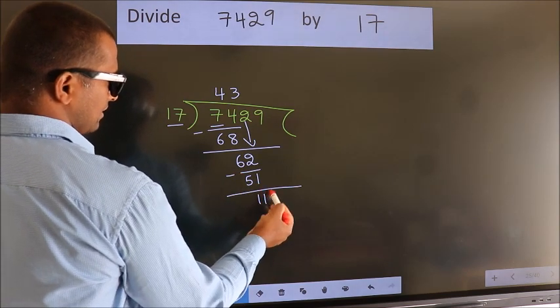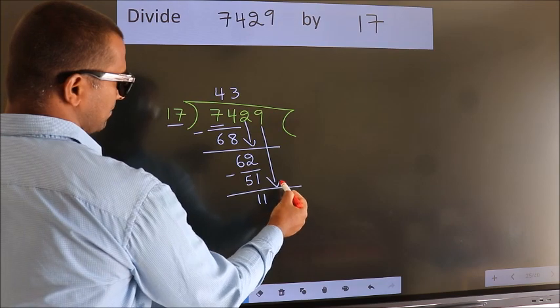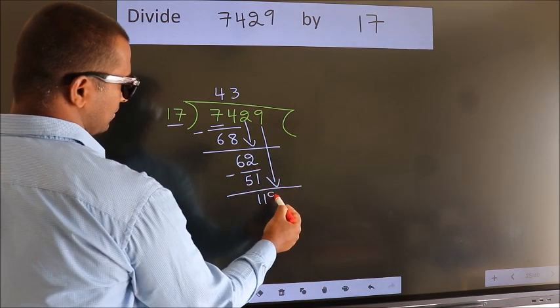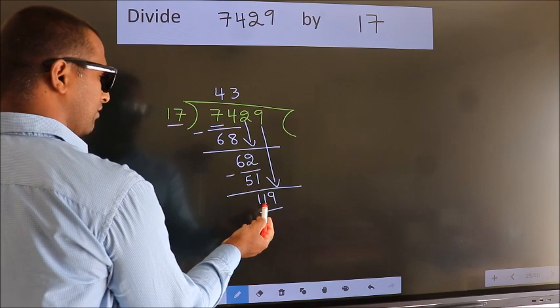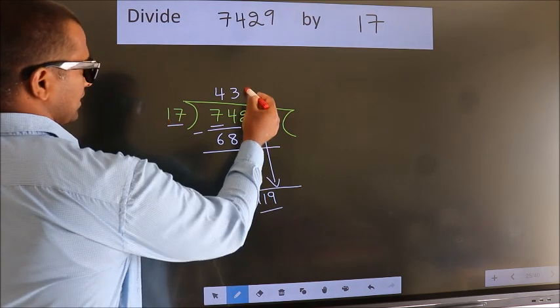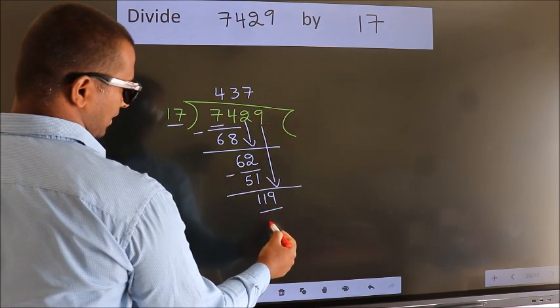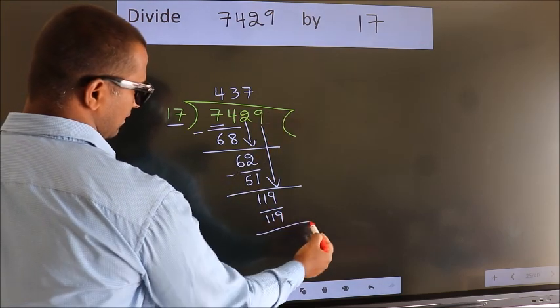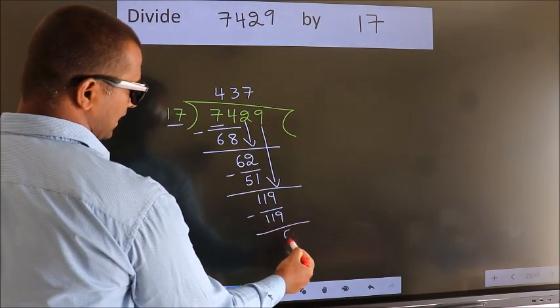After this, bring down the next number. So 9 down. So 119. When do we get 119 in the 17 table? 17 sevens, 119. Now we subtract. We get 0.